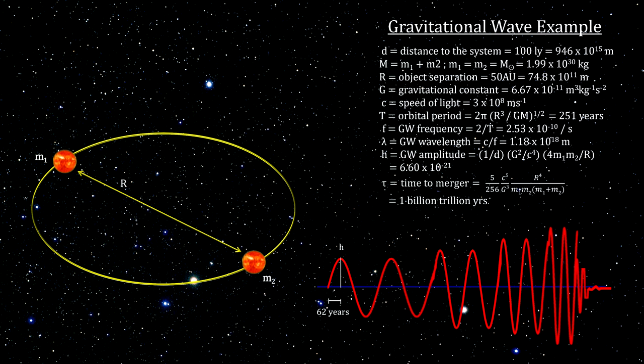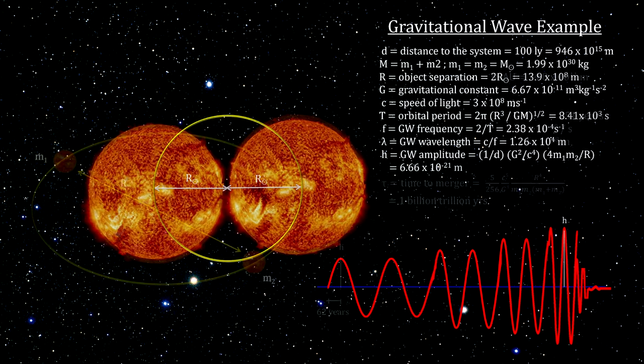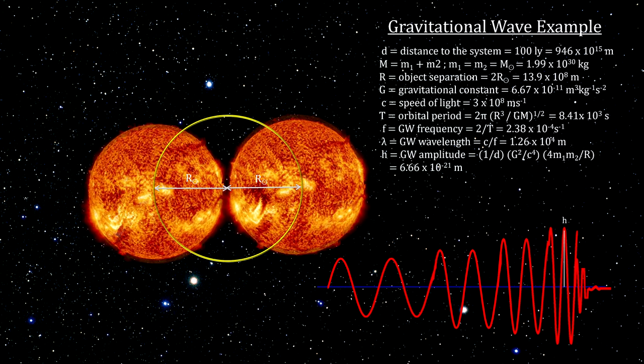Not only that, it will take trillions of years to merger. Should this system ever reach the point where it is close to merging, we'd get the maximum gravitational wave amplitude. We find that the distance between their centers of mass is still way too large to produce a significant amplitude.